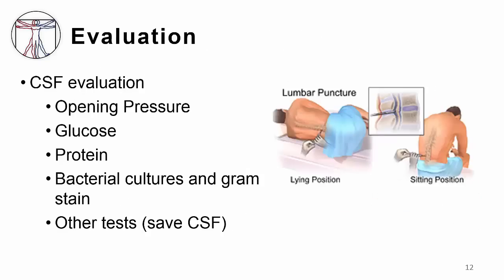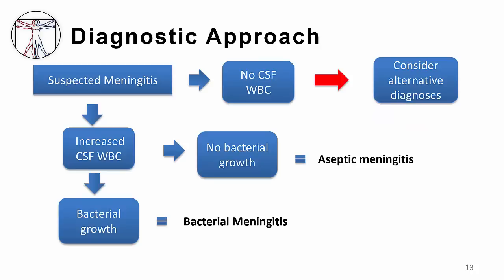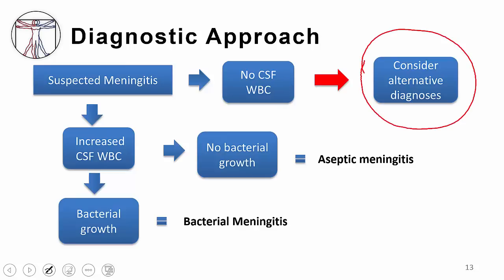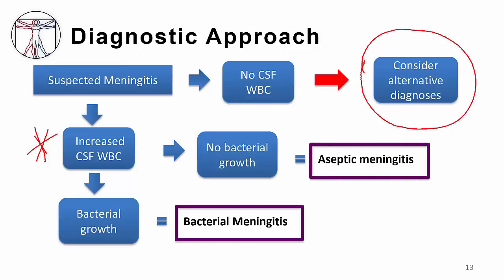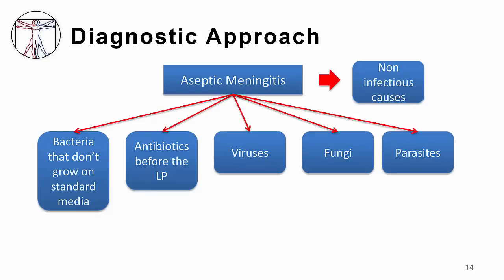No matter what the cause of meningitis, the evaluation is always the same. We do a CSF evaluation through a lumbar puncture, measuring opening pressure, glucose, and protein, and sending cultures for bacteria as well as gram stains. We always save another tube of CSF in case bacteria do not grow and we need to investigate aseptic meningitis. If the lumbar puncture shows no white blood cells, consider alternative diagnoses. If white blood cells are elevated and bacteria grow, that's bacterial meningitis; if nothing grows, that's aseptic meningitis.